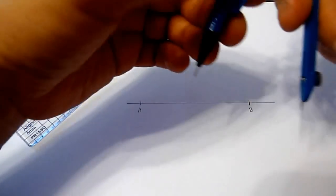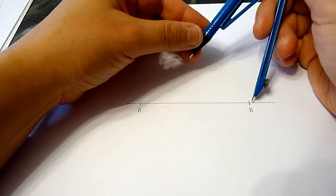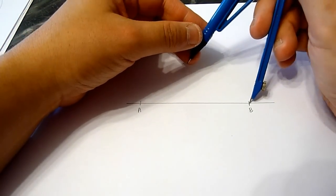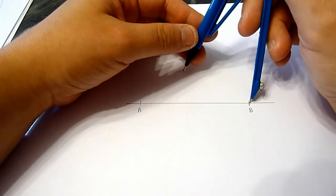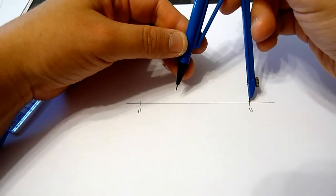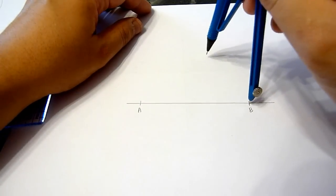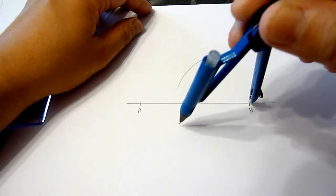Next, using a compass, first of all, we place the sharp end at one end, and now stretch the arm to slightly more than half of the length of AB, and we mark two arcs.